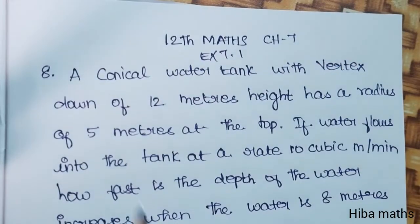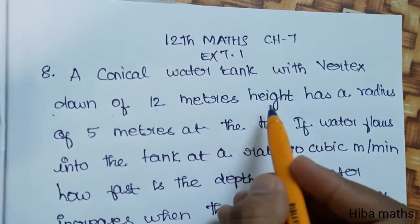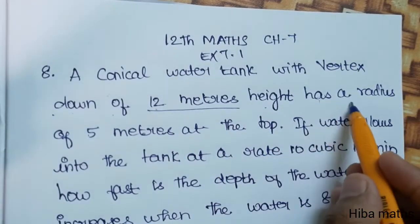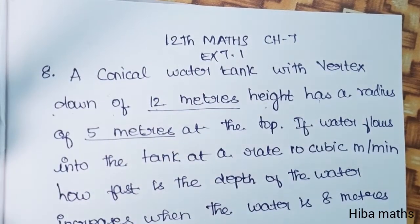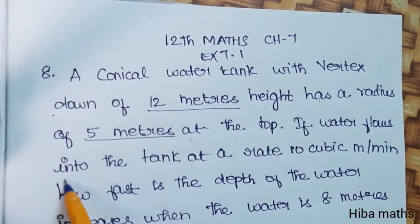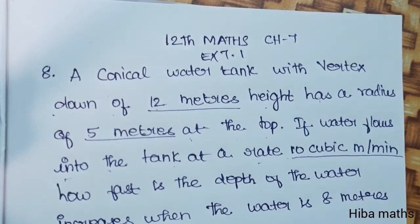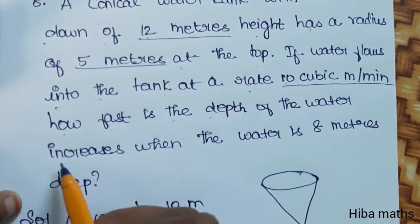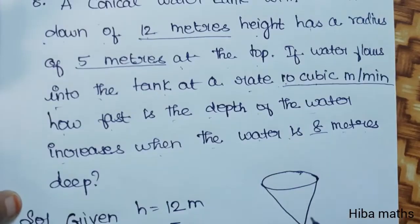8th problem: A conical water tank with vertex down, height 12 meters, has a radius of 5 meters at the top. If the water flows into the tank at the rate of 10 cubic meters per minute, how fast is the depth of the water increasing when the water is 8 meters deep?